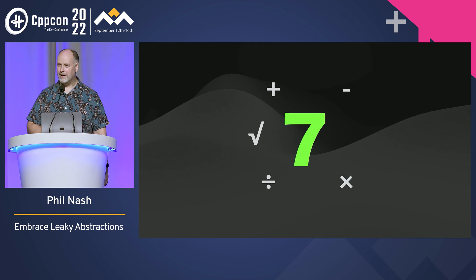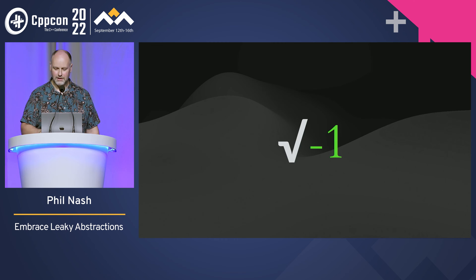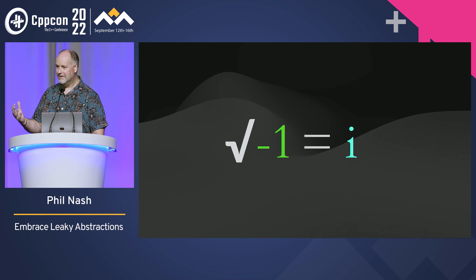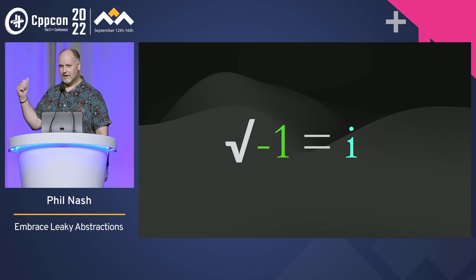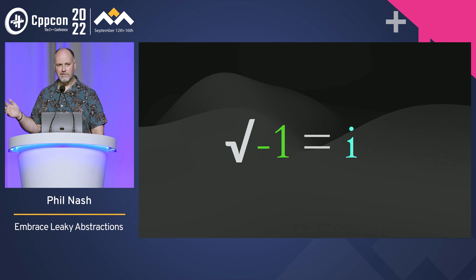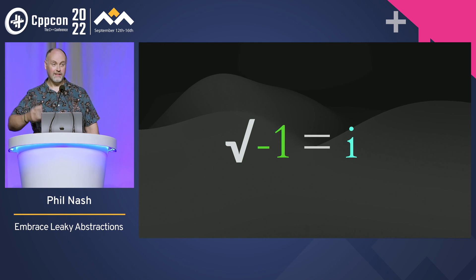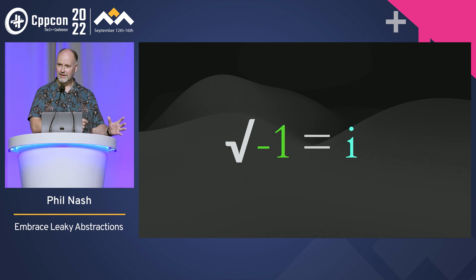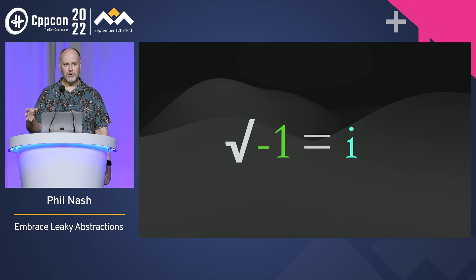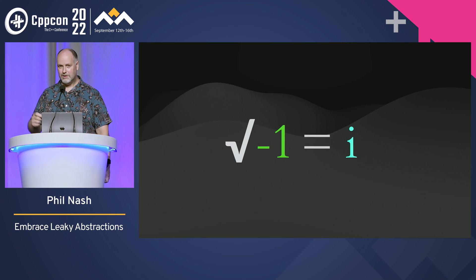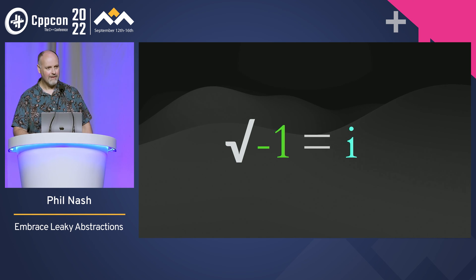It gets even more fun when you talk about square roots. What happens if you take the square root of a negative number? We know now we've got this whole branch of mathematics around imaginary numbers, and it turns out to be surprisingly useful. But we discovered imaginary numbers in about the 16th to 18th century, whereas square roots were discovered in the 16th to 18th century BC. So this was leaking for about three and a half thousand years. My time scales on normal software development projects are a little bit shorter than that — so what chance do we really have?